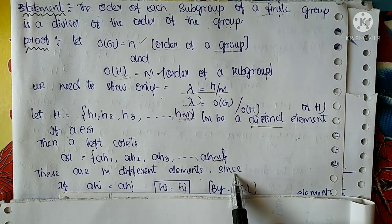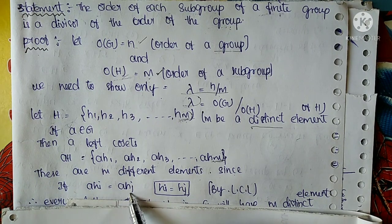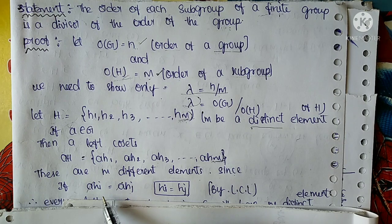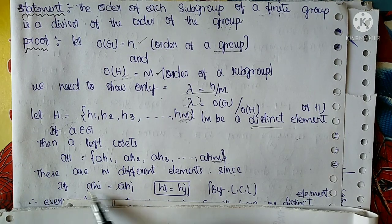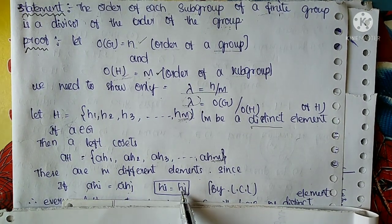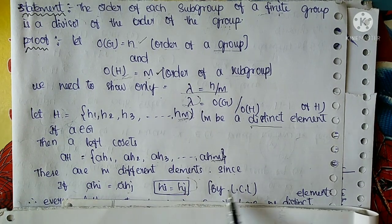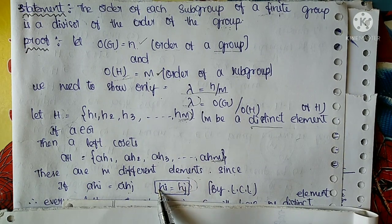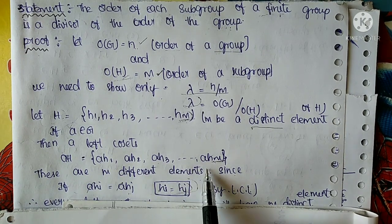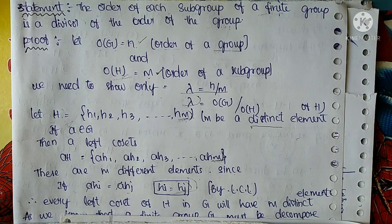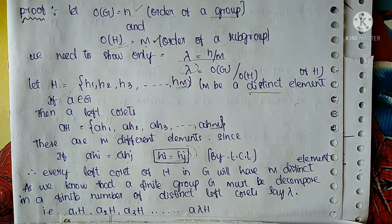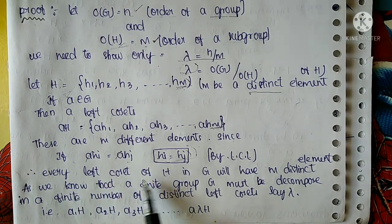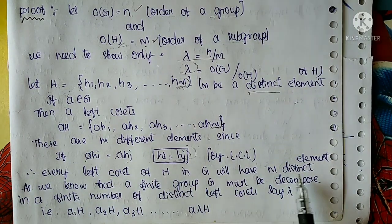Since these are different elements — if AHi equals AHj, then by the left cancellation law we can cancel A, giving Hi equals Hj. So every element in the left coset is distinct. That is why there are m different elements, and every left coset of H in G will have m distinct elements.